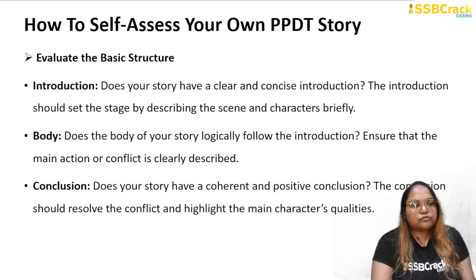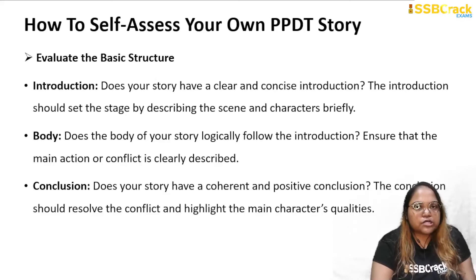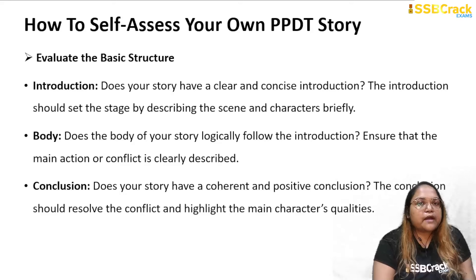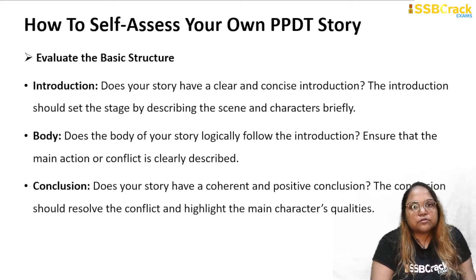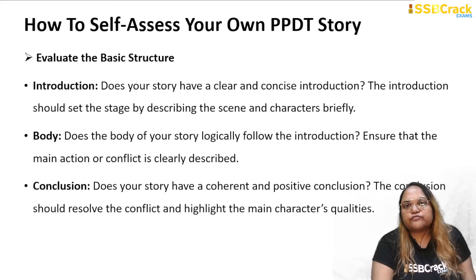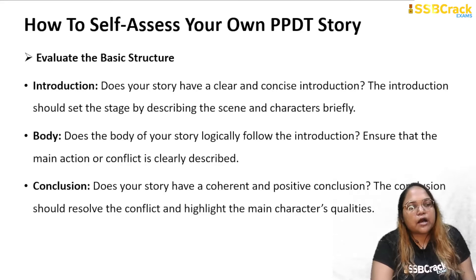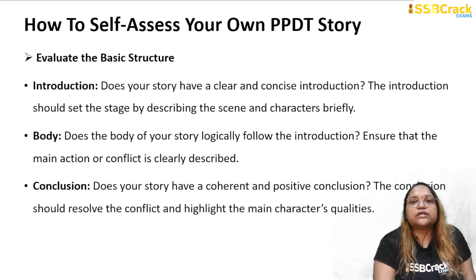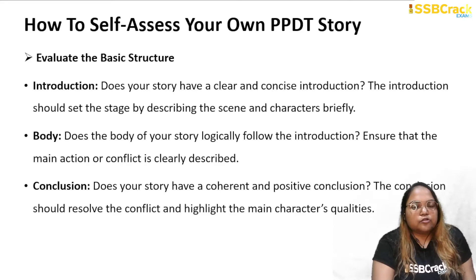The first point to evaluate when you write a PPDT story is the basic structure. Basic structure means your story has an introduction, a body, and a conclusion, in chronological order. The introduction sets the backdrop — where is the scene, what are the characters doing. In the body, the hero takes multiple actions or steps to achieve the target. The conclusion highlights what qualities are visible in the main character. You have to check whether this basic structure is maintained in your PPDT story.